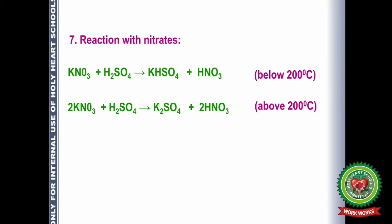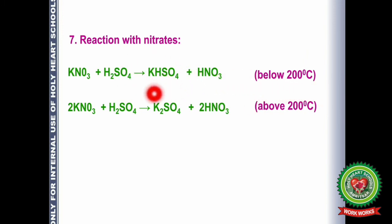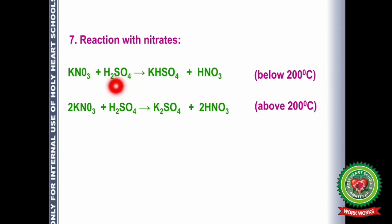If we take KNO₃ (potassium nitrate) or sodium nitrate, they undergo the same type of reaction. Potassium nitrate with H₂SO₄ below 200°C forms potassium hydrogen sulfate and HNO₃ (nitric acid). These reactions can be used for the preparation of nitric acid. Similarly, the previous reaction using sodium chloride can be used to prepare HCl, while using potassium nitrate yields nitric acid. Above 200°C, sodium sulfate is formed.